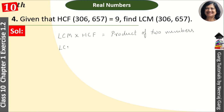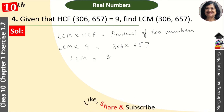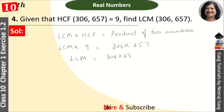LCM we have to find. HCF is given as 9. And the product of the two numbers is 306 × 657. So, LCM = (306 × 657) / 9.